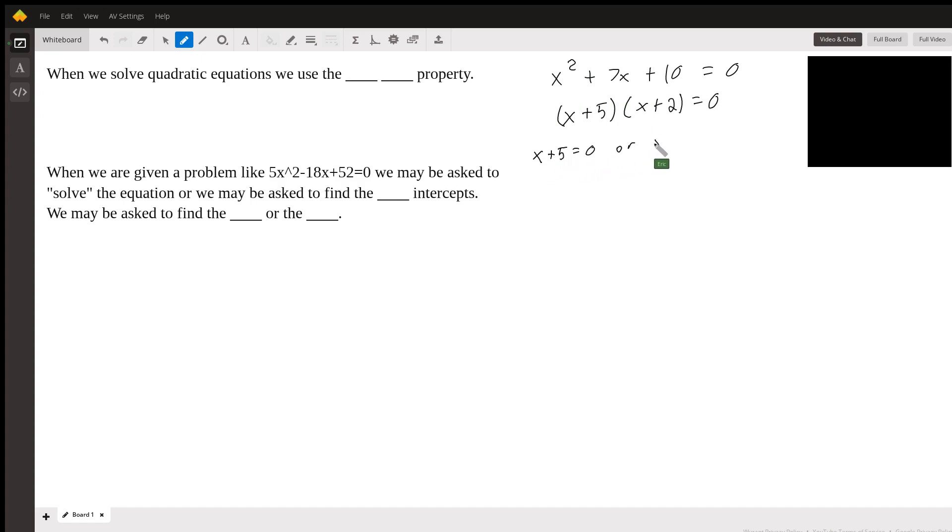So for two binomials to equal zero, either one binomial or the other binomial must equal zero. So x + 5 = 0 or x + 2 = 0. Solving for x, you get x = -5 or x = -2.